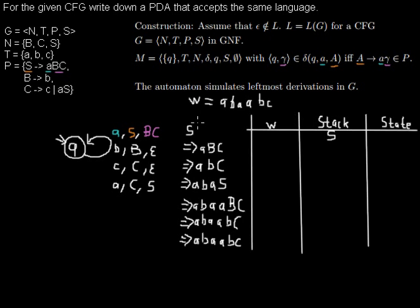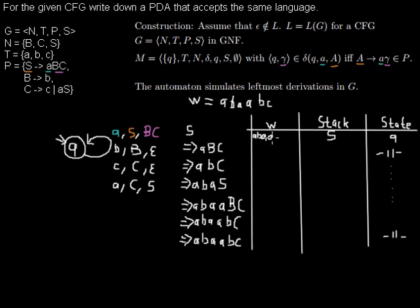In this automaton there is only one state, which is named Q. You won't do a transition into any other state — we will always be in Q until the end. At the beginning we have the full word left to read. Now we want to take transitions from the automaton and read the terminals from the word.